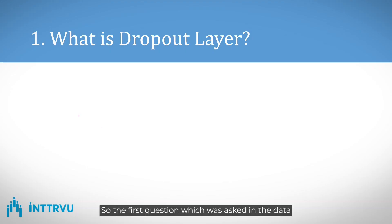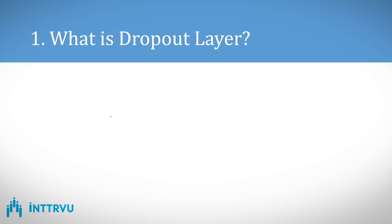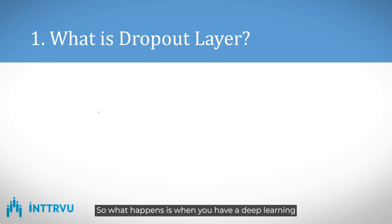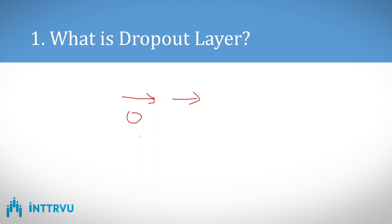The first question asked in the data science interview was: what is a dropout layer? The dropout layer is typically used in deep learning neural networks. When you have a deep learning neural network with a lot of layers and hidden layers, that network becomes really complex and there is a chance of overfitting.